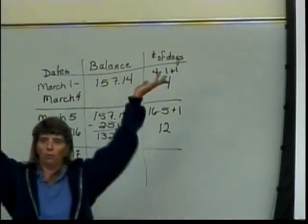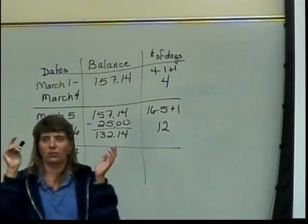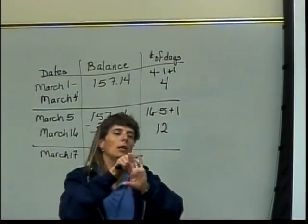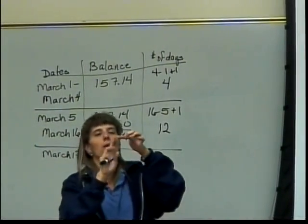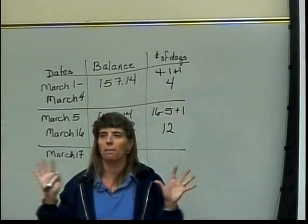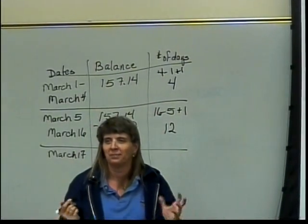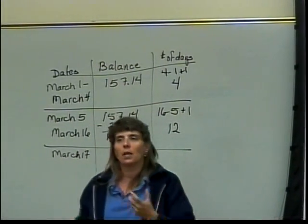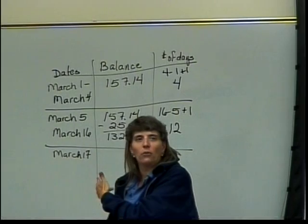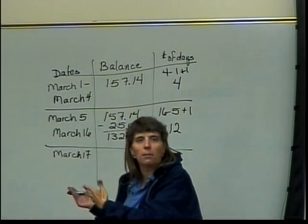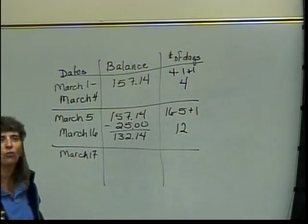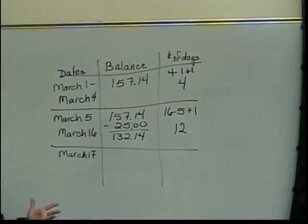Or, if you're like me and you don't always trust yourself, you just count: 5, 6, 7, 8, 9, 10, 11, 12, 13, 14, 15, 16 — that's 12. It's pretty safe on these because you only go through approximately a month, so you don't get to too many fingers. You can usually remember where you are.